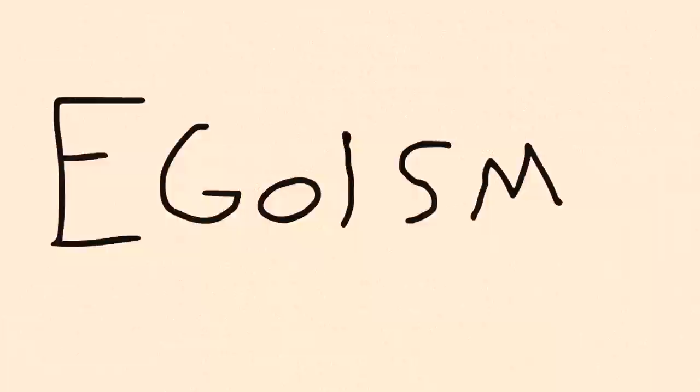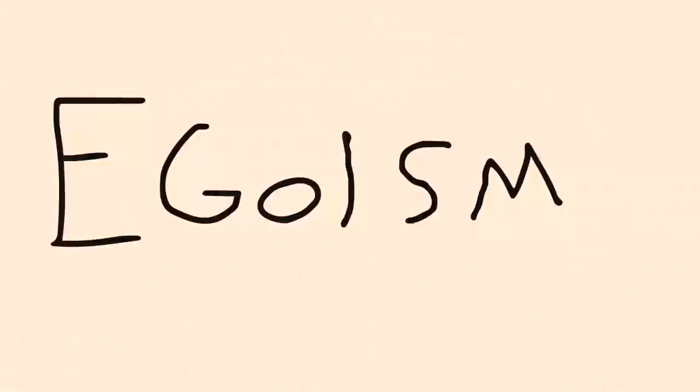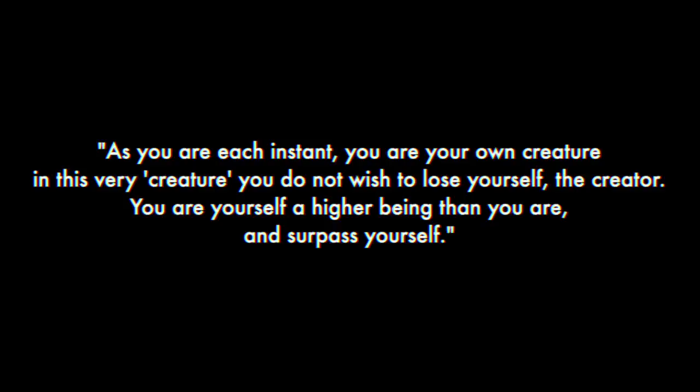Stirner then proceeds to do the best he can in offering a concept that describes human nature. This he calls egoism, which sees man as both a creation, or creature, and a creator. As you are, each instant, you are your own creature. In this very creature, you do not wish to lose yourself, the creator. You are yourself a higher being than you are, and surpass yourself.